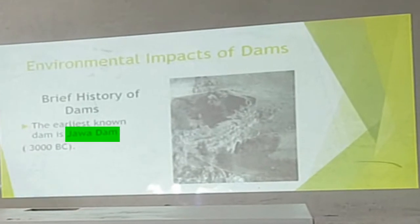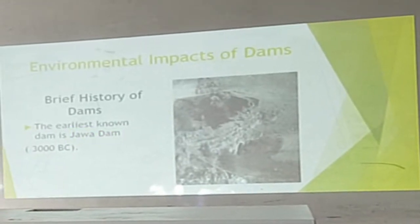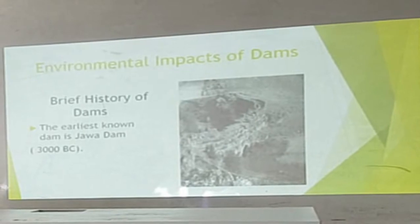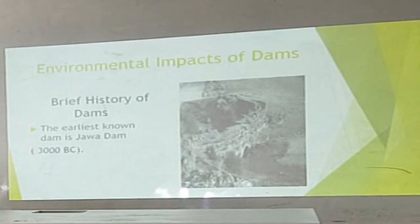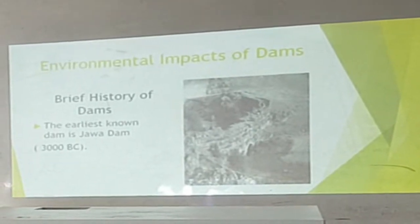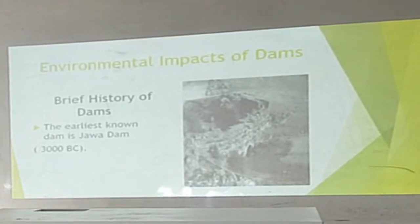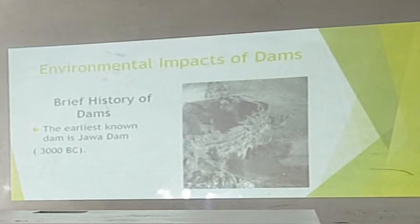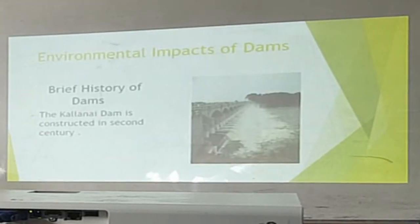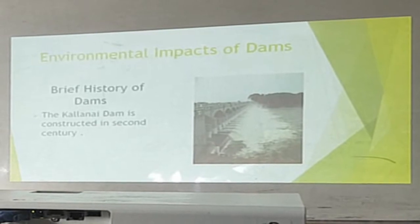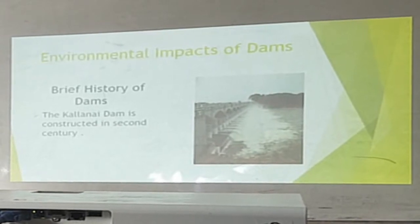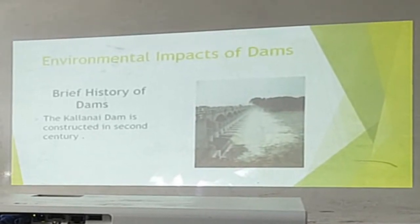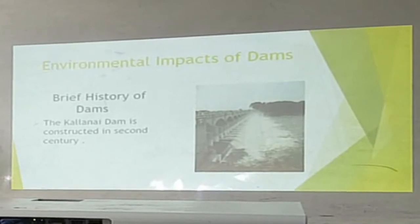The earliest known dam is the Jawa Dam, present in Jordan. Today the Jawa Dam is no longer in use. From structures, it is dated to 3000 BC. The Kallanai Dam was constructed in the second century. It is present in India and is still in use.